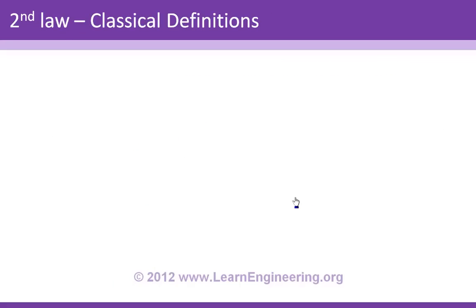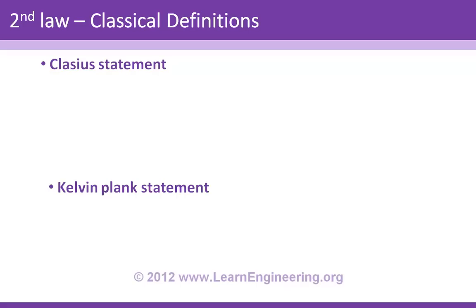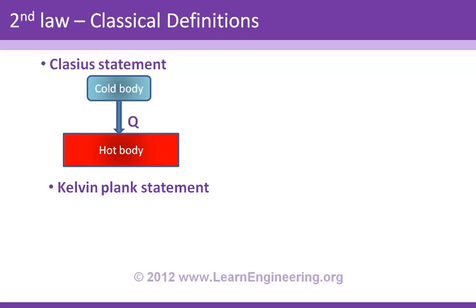What is the second law of thermodynamics? If you check a standard thermodynamics textbook, you'll find mainly two statements. One is the Clausius statement: consider a system where heat is flowing from a cold body to a hot body with no other process happening — according to the Clausius statement, this process is impossible.